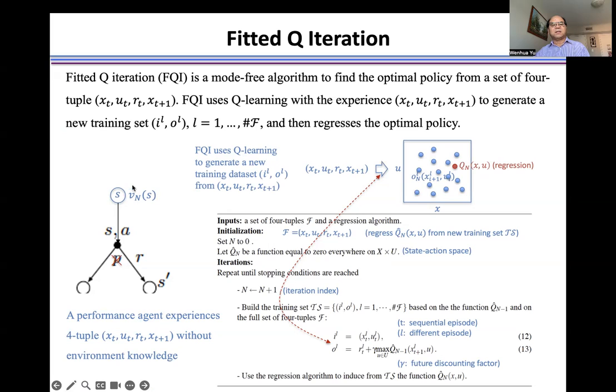a performance agent can move from its current state and takes this action A, and then moves from the current state to the next S prime and receives this reward. A learning agent learns from this experience through Q-learning.